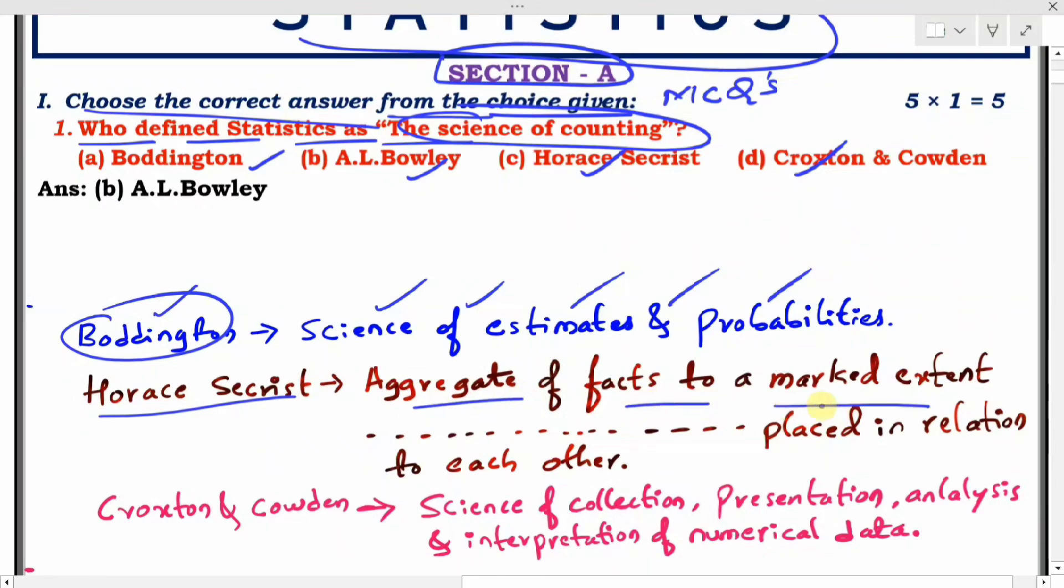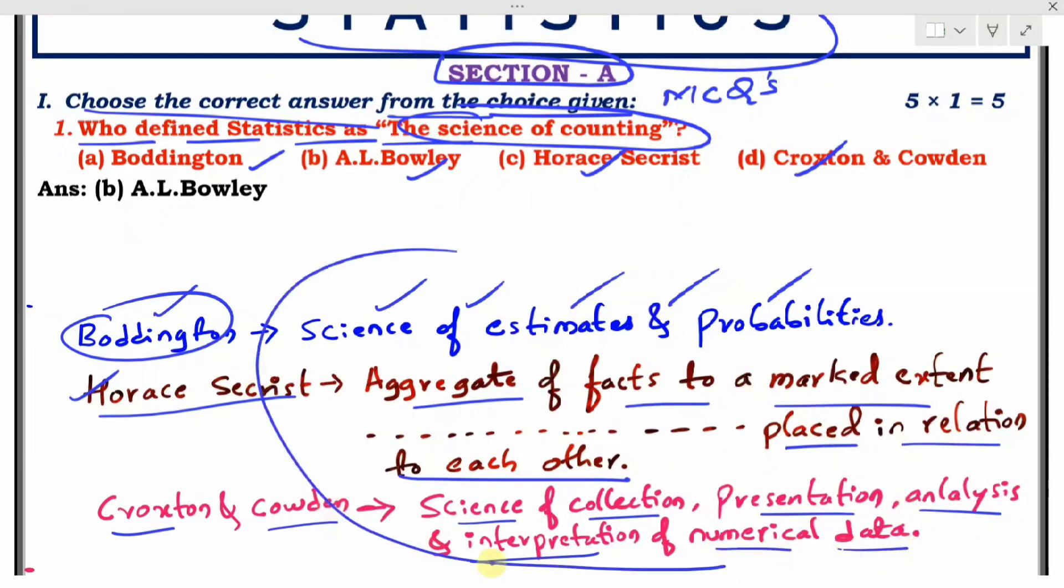According to Horace Secrist, statistics is 'aggregate of facts to a marked extent by the multiplicity of causes, placed in relation to each other'. Croxton and Cowden defined statistics as 'science of collection, presentation, analysis and interpretation of numerical data'.